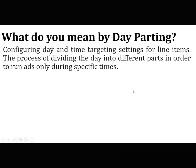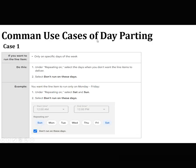We will discuss certain examples to understand day parting better. The first common use case of day parting is Case 1: if you want to run the line items only on specific days of the week. Under 'repeating on', select the days when you don't want the line items to deliver. Second, select 'don't run on these days'. For example, you want the line item to run only between Monday to Friday.